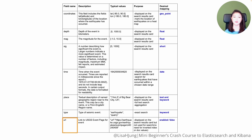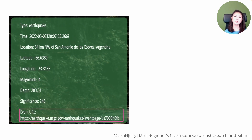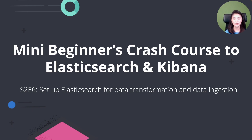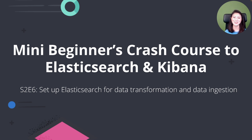Lastly, we have the field URL. This field is only displayed on a card and is not used for search, so there's no need to create an inverted index or doc values for this field — we'll disable it. In this episode, we figured out how we want to transform the data before ingesting it into Elasticsearch, and we came up with the desired mapping to efficiently store and search data. Next, we'll set up Elasticsearch for data transformation and data ingestion. Thank you for watching and I'll see you in the next episode.